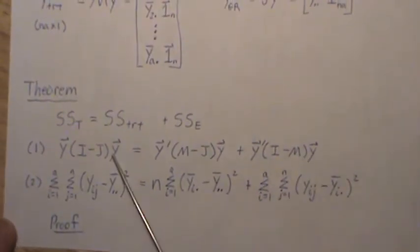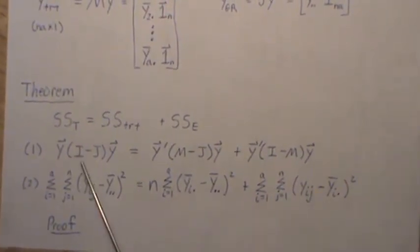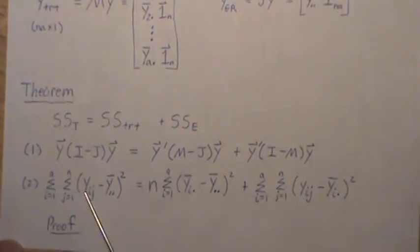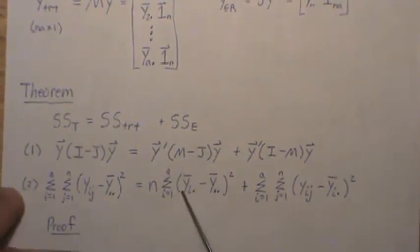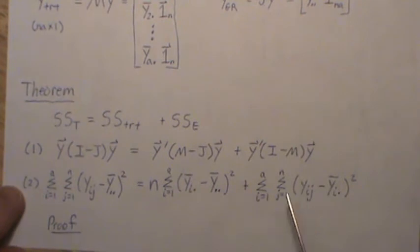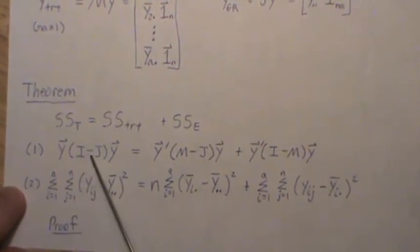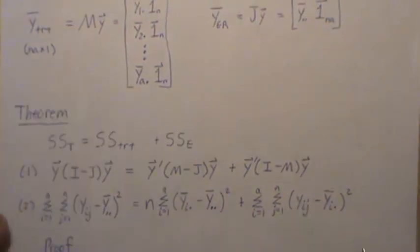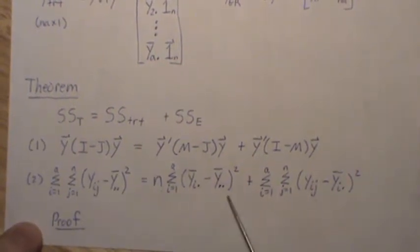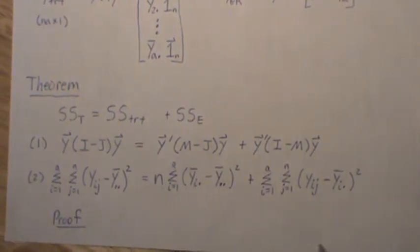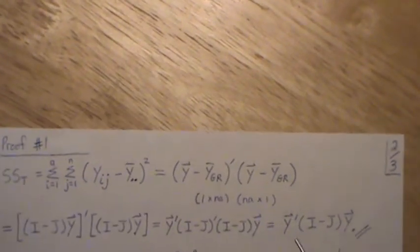Here's the theorem: the sum of squares can be broken into three pieces, in matrix form and also in scalar form. We're going to prove this two different ways. In the first proof, we show that each individual piece equals its corresponding scalar form, and then show the sum of squares can be broken up accordingly. The second proof uses purely scalar notation, which appears frequently in textbooks.